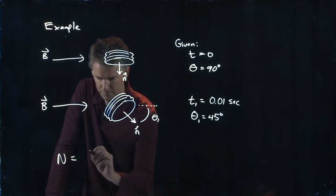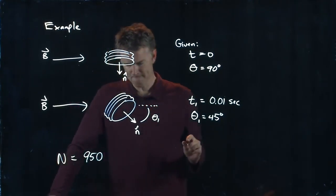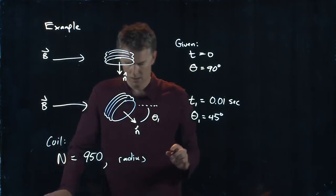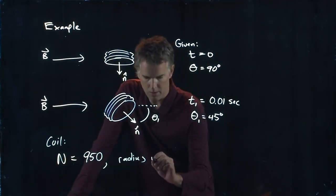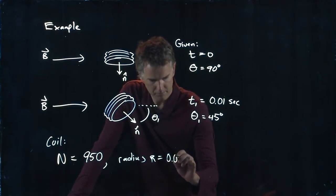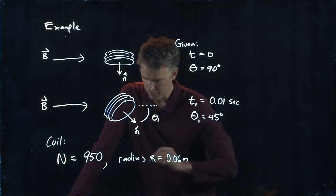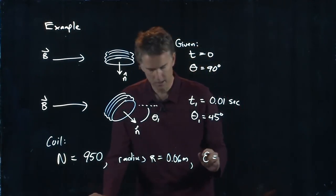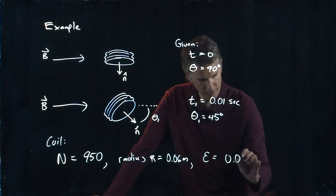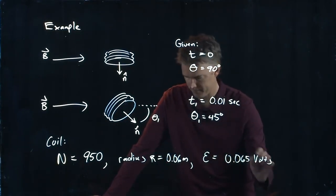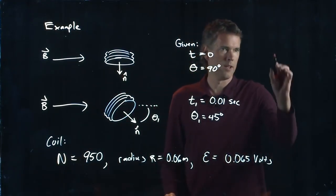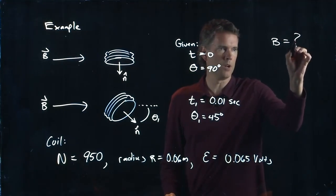Let's give you a little bit more information. The number of turns on this coil is 950, the coil has a radius r of six centimeters, so 0.06 meters, and the emf generated is 0.065 volts.